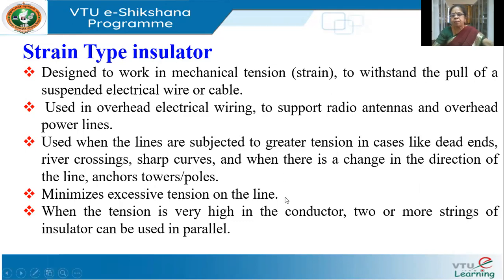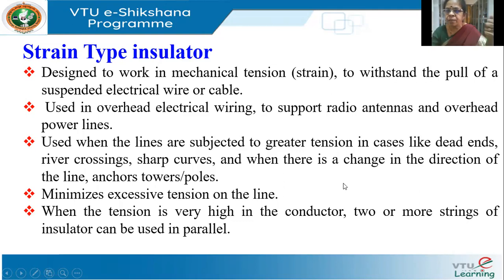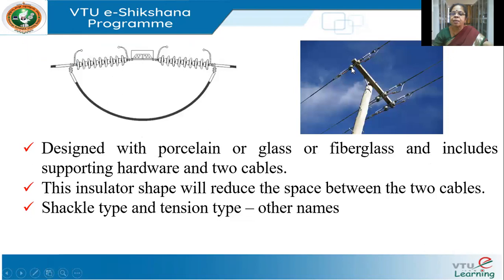Strain insulators are used to minimize tension. When we discussed sag and tension, we saw that tension is one parameter which may damage the conductor. This will minimize excessive tension on the line. When the tension is very high in the conductor, we can use two or more strings in parallel. It is designed with porcelain, glass, or fiberglass, and includes the supporting hardware and the two cables to join it. The other names for this are shackle type and tension type.